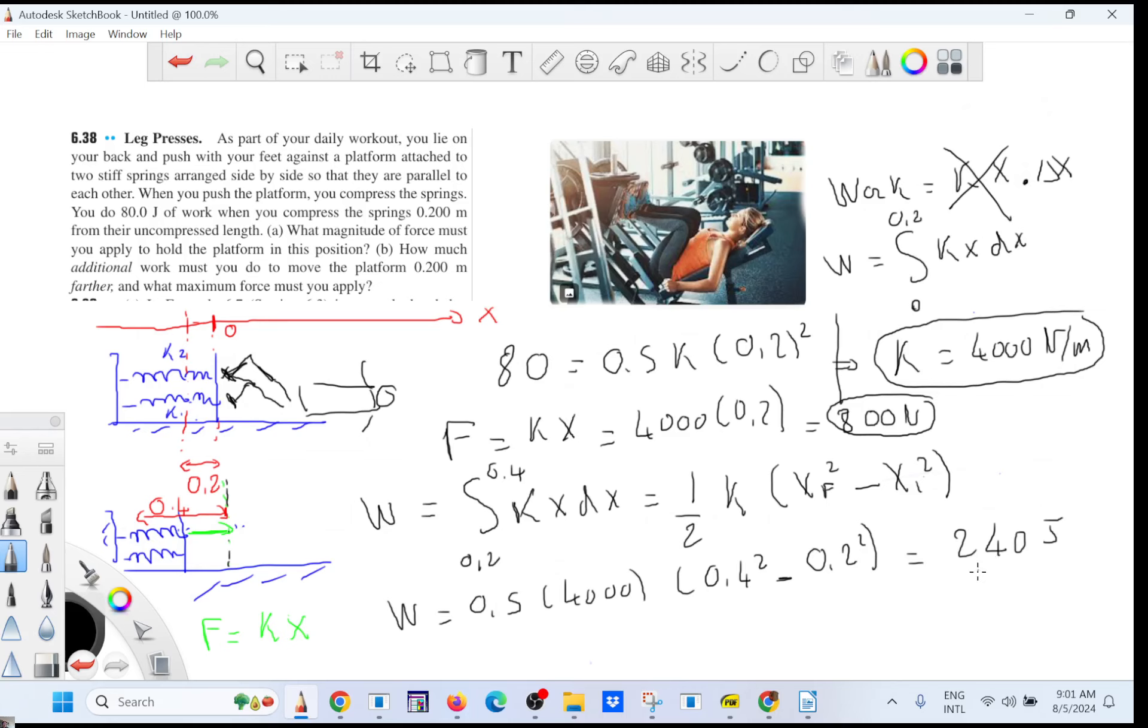So to go from 0.2 to 0.4, you have to do more work than just going from 0 to 0.2. So that's the idea of those press legs. You see you're multiplied by 3, so 3 times the energy.